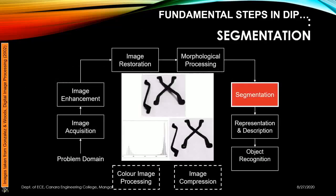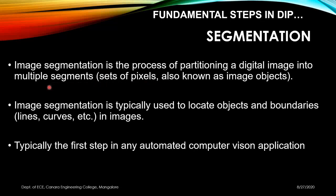The segmentation block identifies the foreground and the background. In this example there is a shape with a shadow in the background, and by using segmentation we clearly identify the object in the foreground while completely eliminating the shadow. Image segmentation is the process of partitioning a digital image into multiple segments — sets of pixels also known as image objects — and is typically used to locate objects and boundaries such as lines and curves. It is usually the first step in any automated computer vision application.